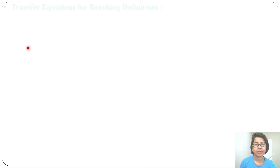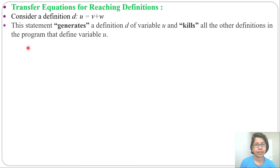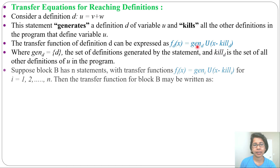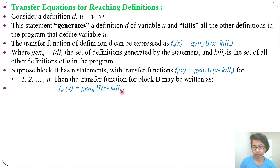Then I discussed the transfer equation for reaching definition: F(D) equals gen of D union x minus kill of D. Gen stands for generate while kill is for killing. We can write f of B(x) equal to gen of B union x minus kill of B.